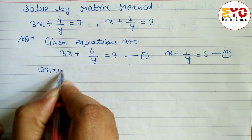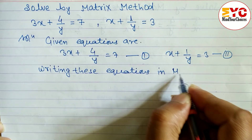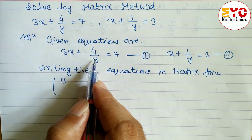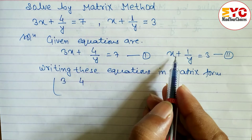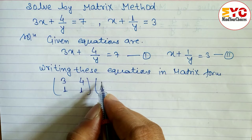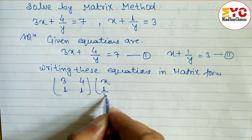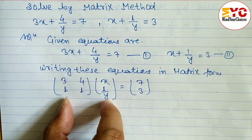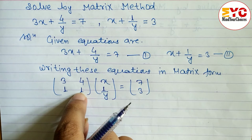Now we write these equations in matrix form. The coefficient of x in equation 1 is 3, so we write 3. The coefficient of 1 by y in equation 1 is 4, so we write 4. The coefficient of x in equation 2 is 1, and the coefficient of 1 by y in equation 2 is 1. For the variable column, x is in the numerator so we write x, and y is in the denominator so we write 1 by y — do not write just y. After the equals sign we write 7 and 3.